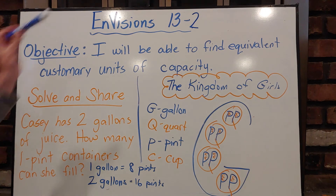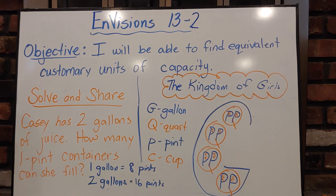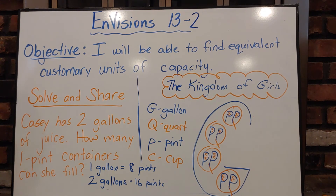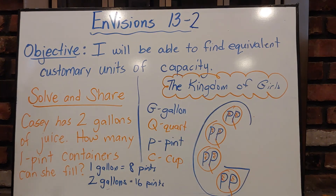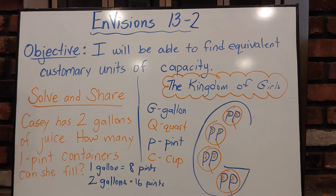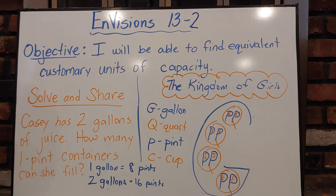So today's our introductory lesson for 13-2. We had our solve and share, I taught you the Kingdom of Girls, and we went over our objective. Tomorrow we'll do more guided practice. After watching this video, grab a piece of paper and draw the Kingdom of Girls — drawing it helps it stick in your memory. Then you're going to do some practice on IXL using capacity, and we'll also review length — miles, feet, and inches — from last Thursday and Friday. I will see you tomorrow. Bye.